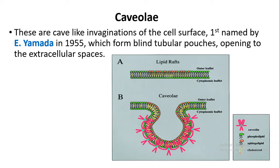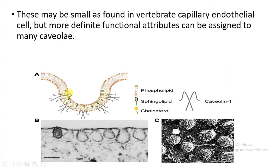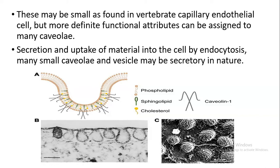They also have a role in cell signaling. Caveolae are small structures found in vertebrate endothelial cells and they have a function in cell signaling — they uptake material from the external side and allow it to enter inside the cell. You can see on the plasma membrane how a number of caveolae are present, meaning they are performing endocytosis and may also be secretory in nature.